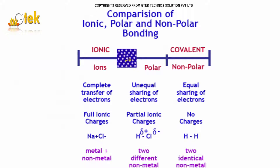A compound is ionic if it contains a lot of ions. A complete transfer of electrons gives full ionic charges — for example, sodium chloride, which is a combination of a metal and a non-metal. A compound with unequal sharing of electrons and partial ionic charges — such as HCl, hydrochloric acid — involves two different non-metals. Under covalent bonds, non-polar means equal sharing of electrons with no charges, as in hydrogen gas, which is two identical non-metals. So a bond can be ionic or covalent, and under covalent it is either polar or non-polar.